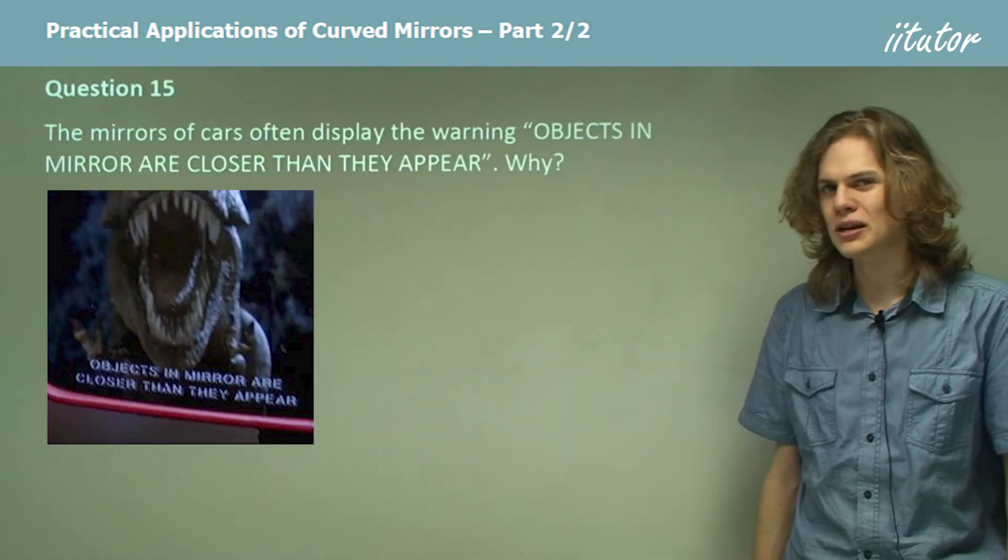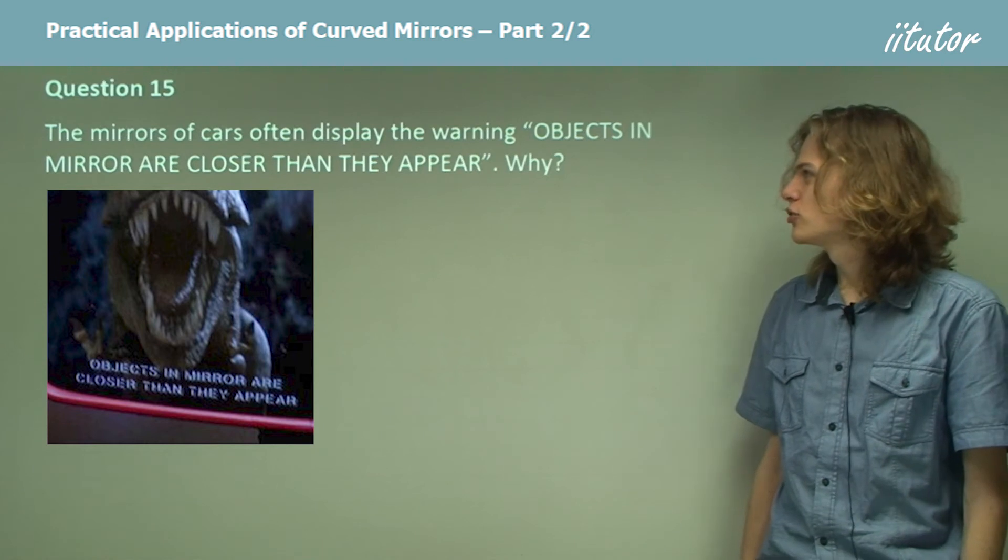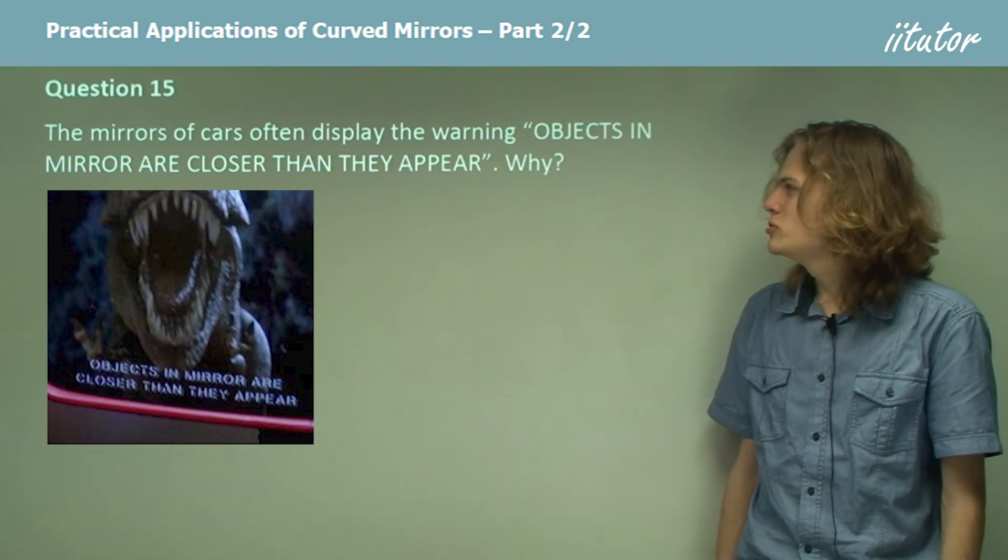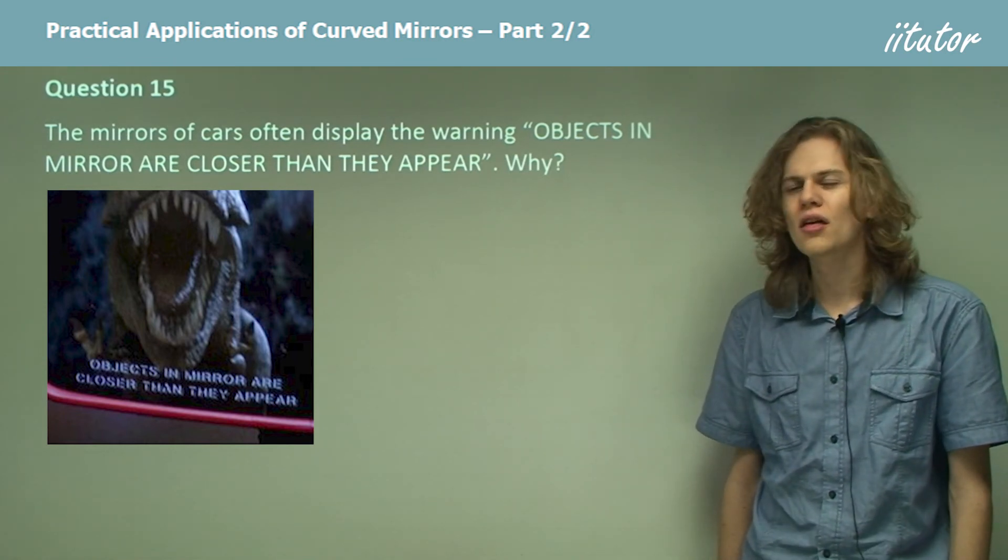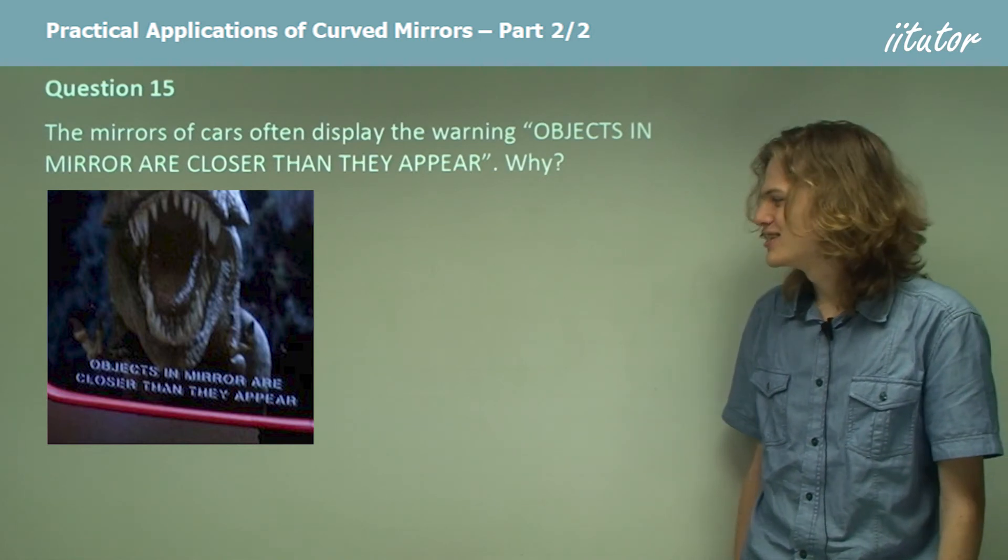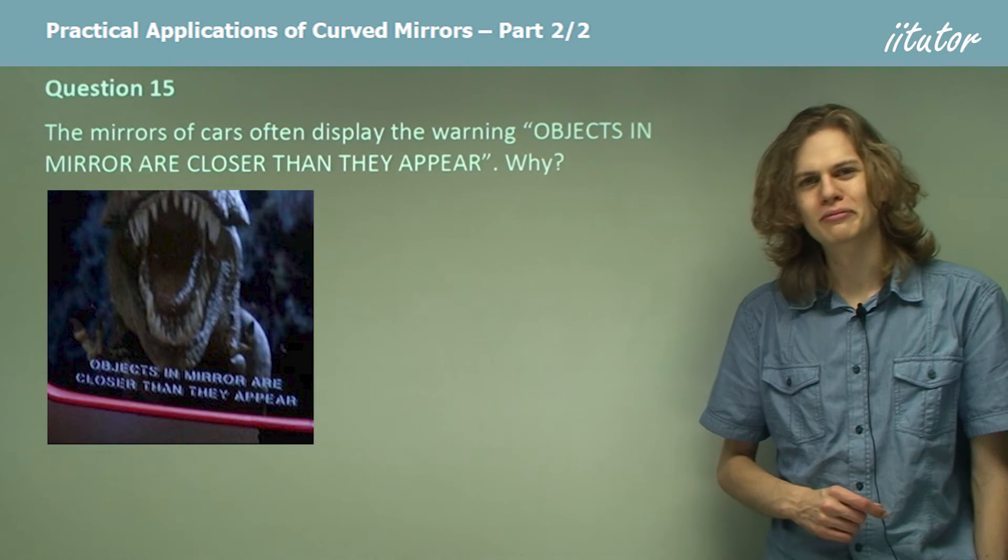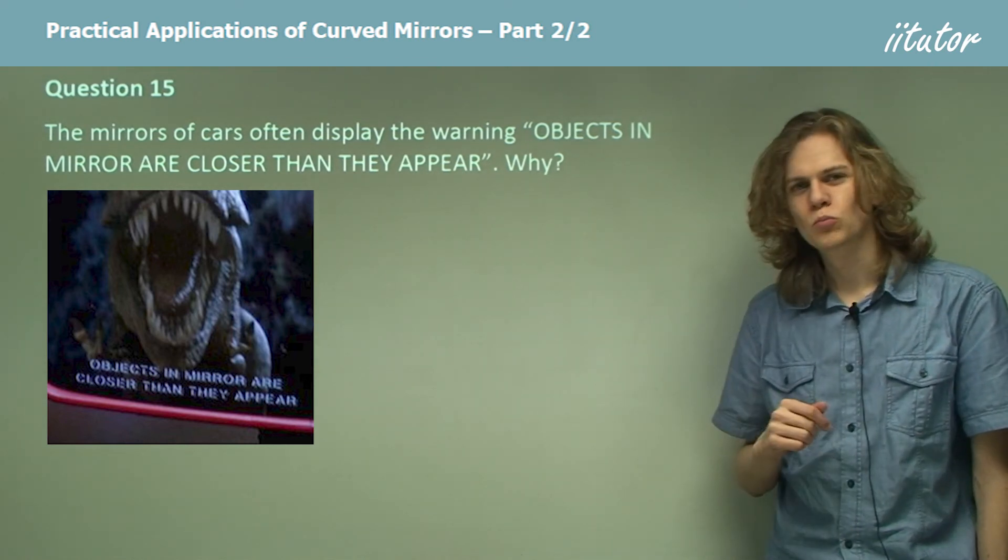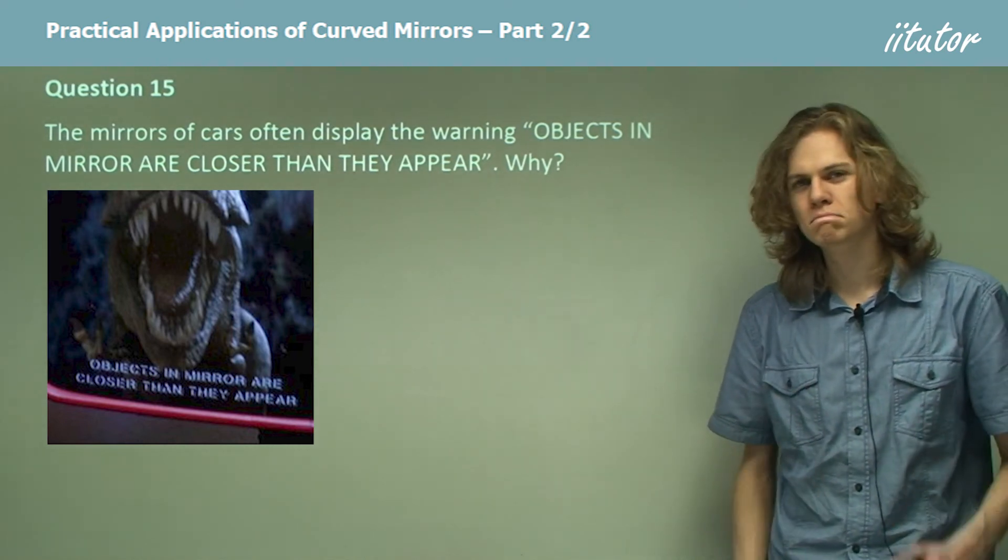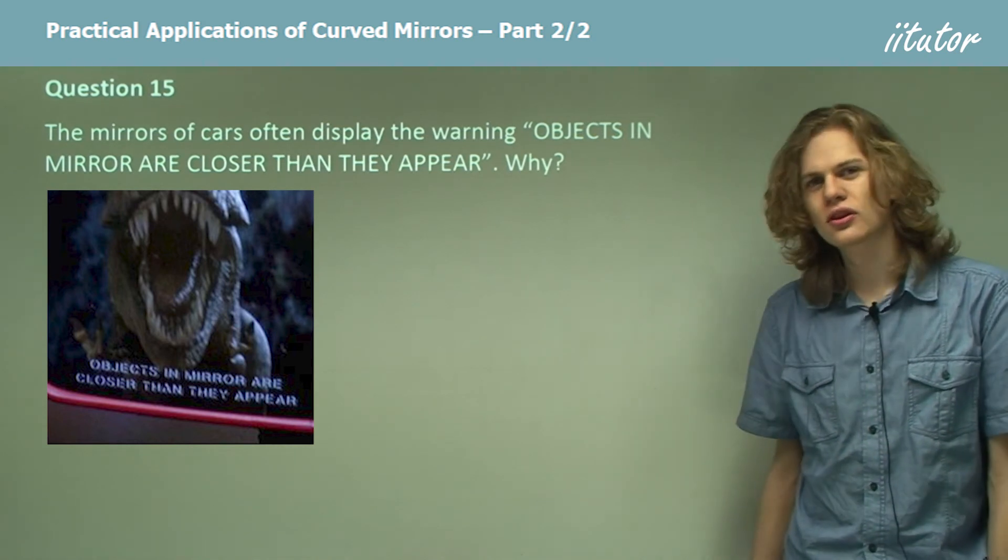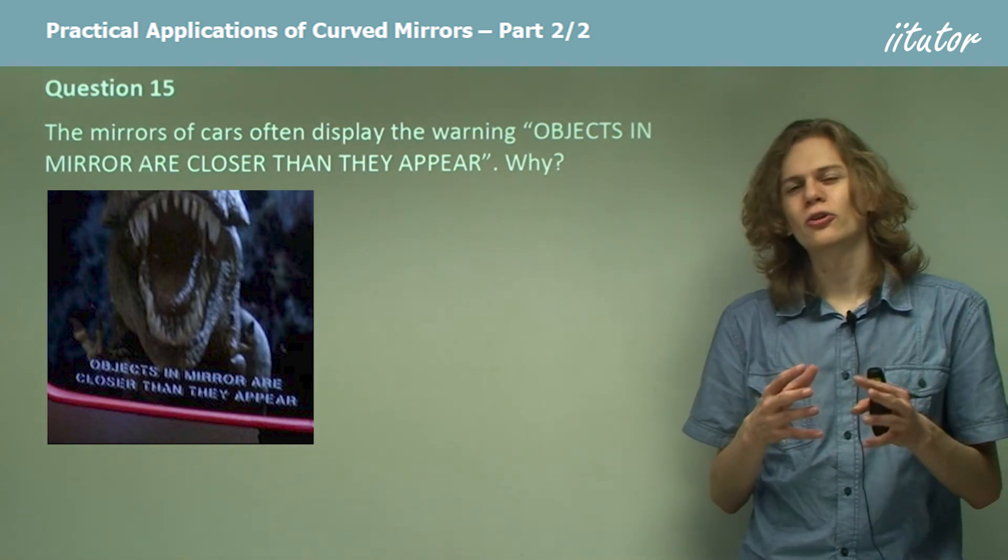Question 15. The mirrors of cars often display the warning, objects in mirror are closer than they appear. We can see that at the bottom of this side mirror in a screen from a movie. So why is this? Why do they require this warning? Well, the answer of course, is because the mirror is not a plain mirror.